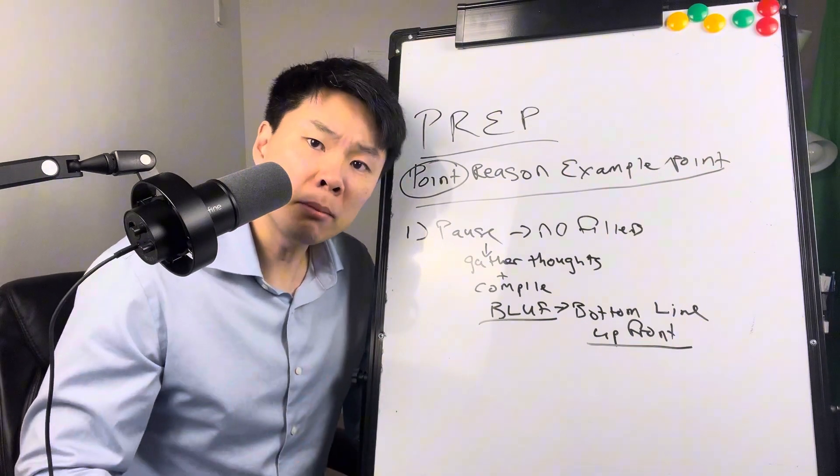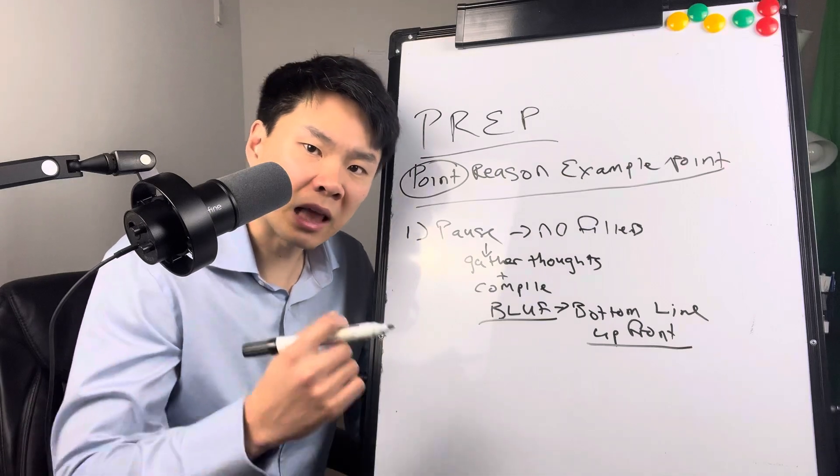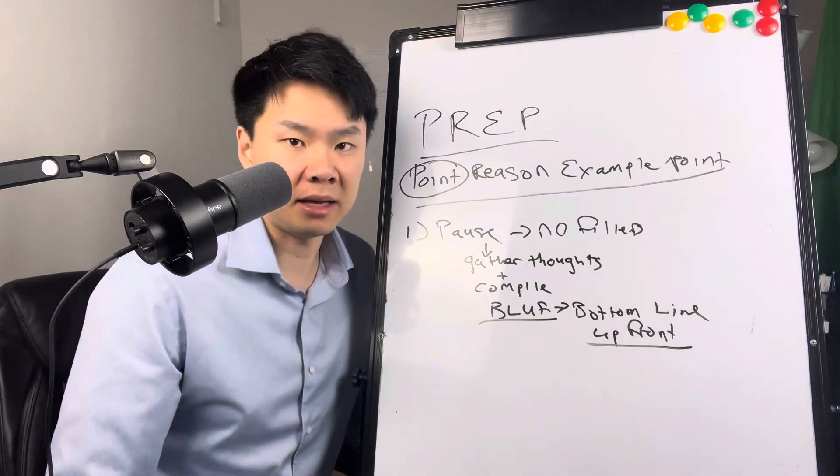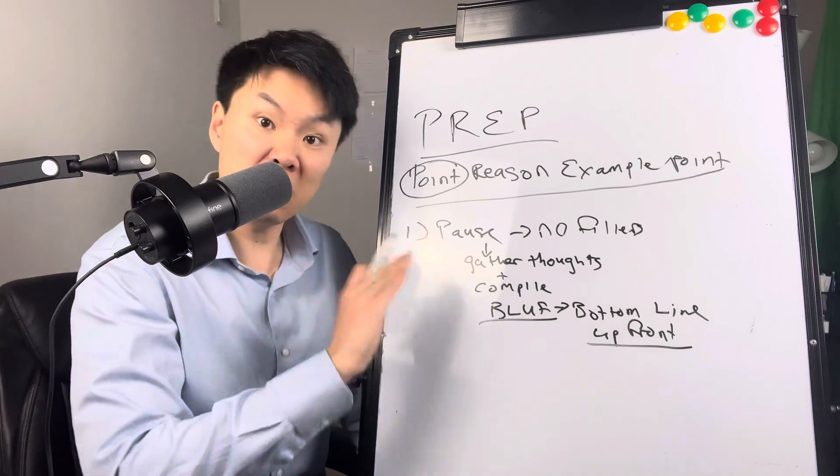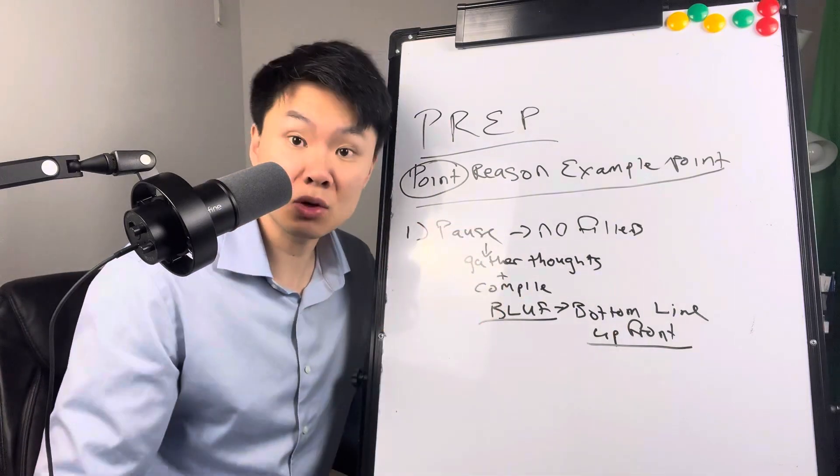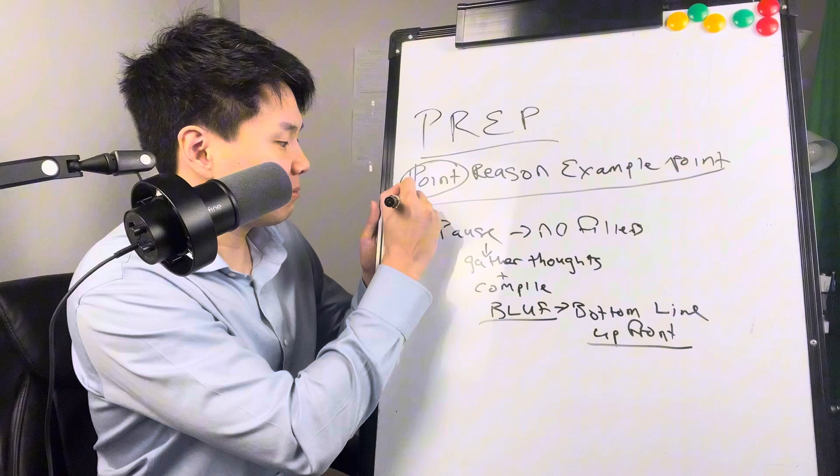Well, our number one partner priority is to collaborate with X company. Very succinct. We're just saying this is our priority. It's a one sentence point.